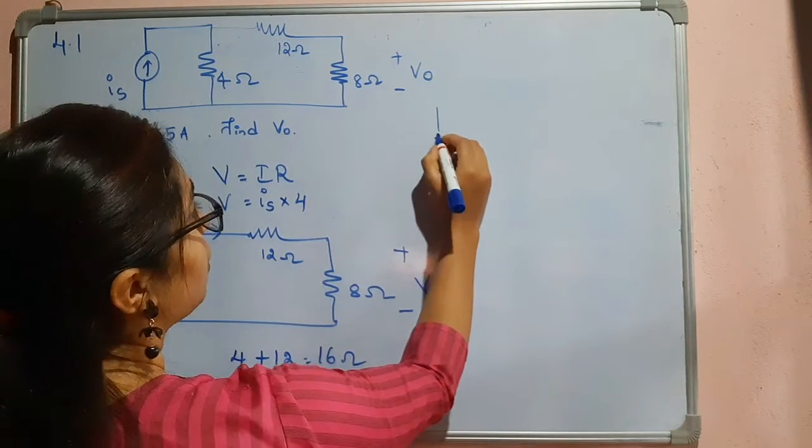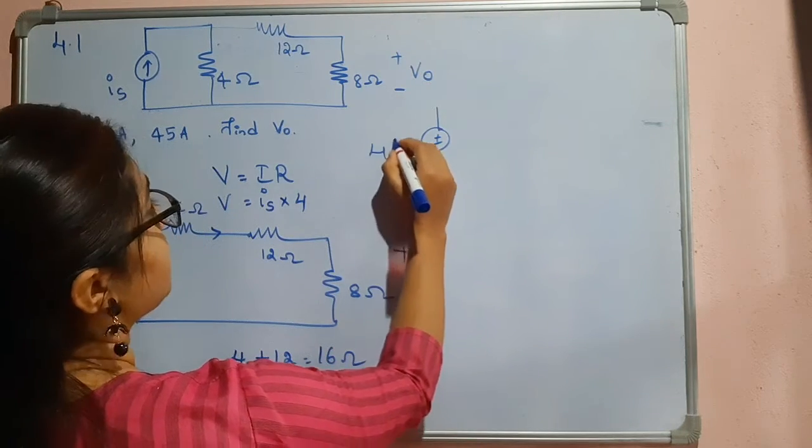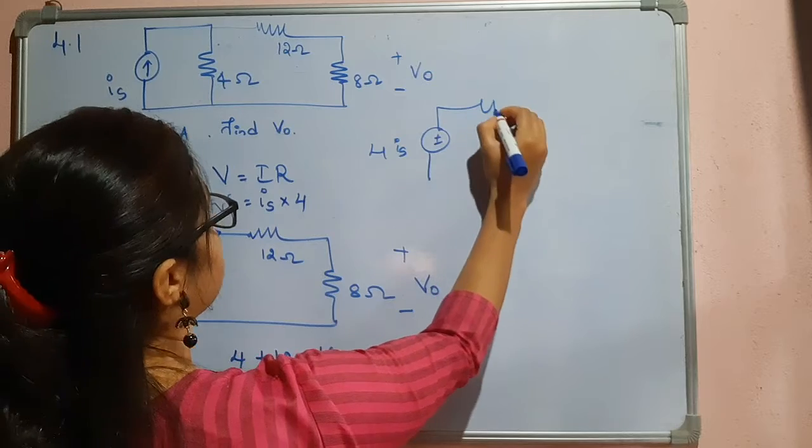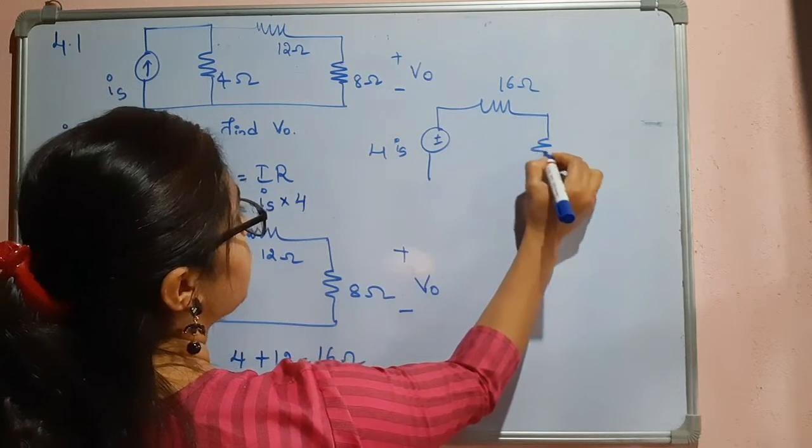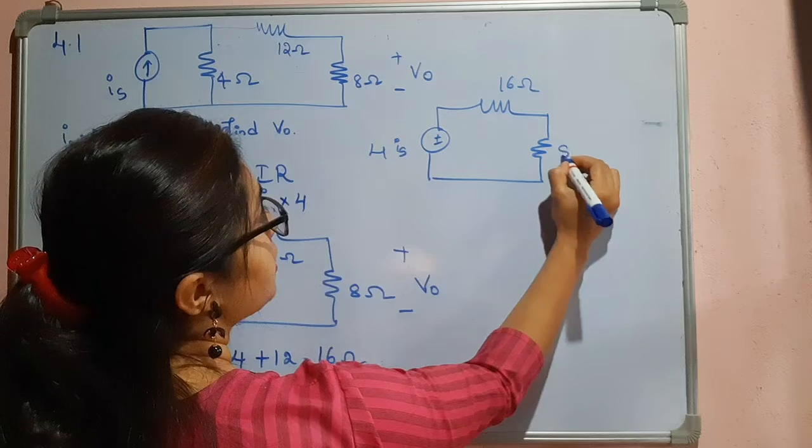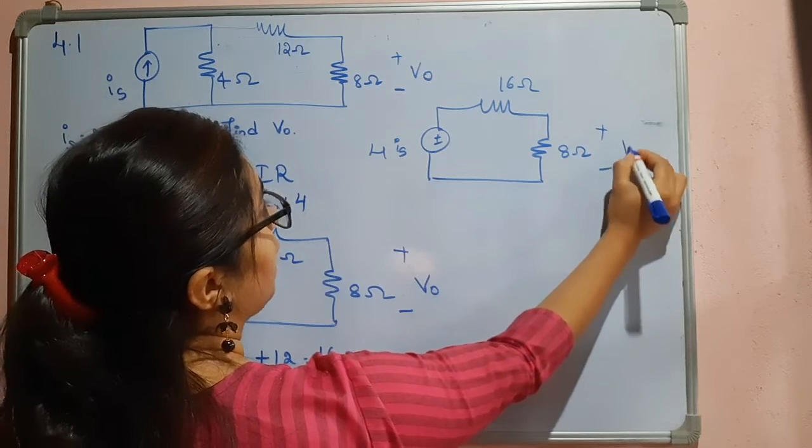So now we have 4IS and here we have 16 ohm and here we have 8 ohm. Now we have to find this V0.